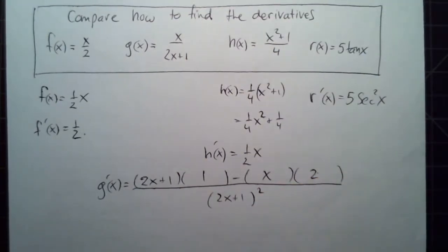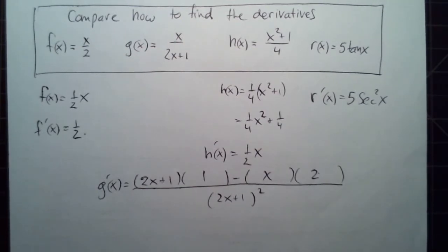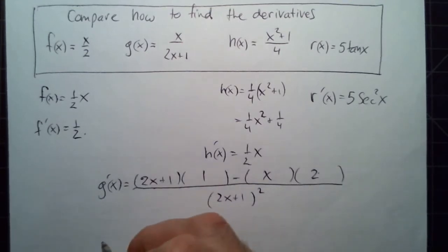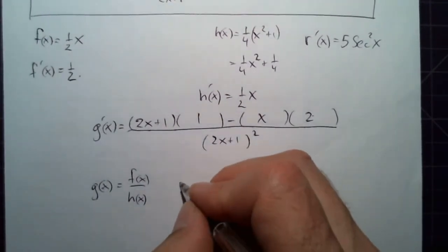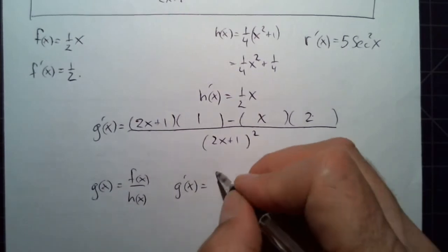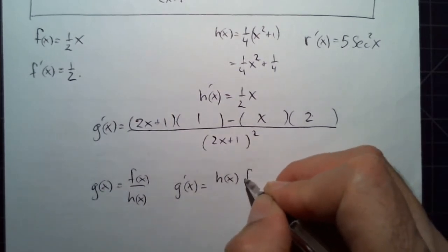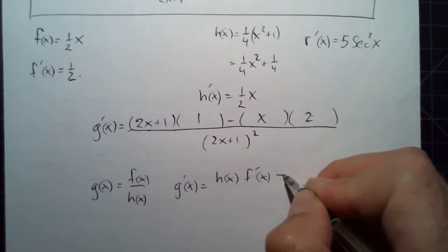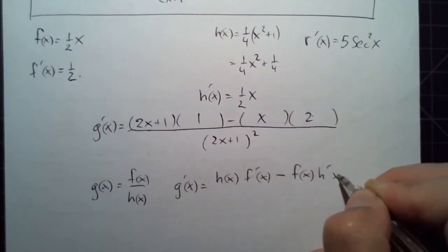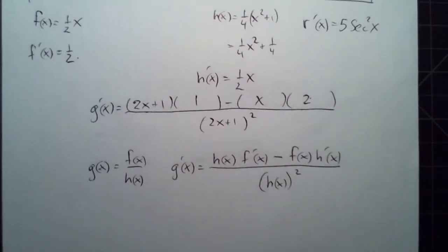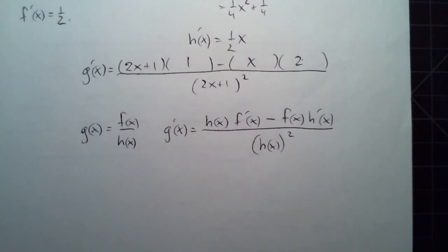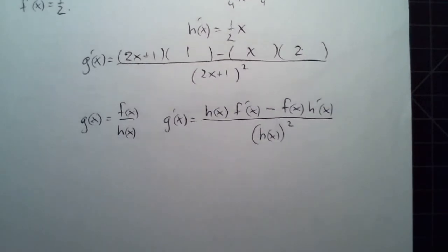We copy the denominator and square it. In formal notation: if g(x) = f(x) / h(x), then g′(x) = [h · f′ minus f · h′] over h squared. That's another way to write it. All right, let's try this.